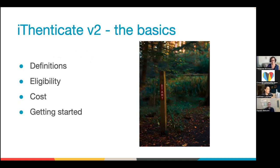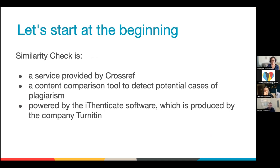Just starting with some quick definitions, because there are some technicalities we need to go over. Similarity Check is the service provided by Crossref — it is a content comparison tool to detect potential cases of plagiarism. It is powered by the Authenticate software, which is produced by a company called Turnitin. So Crossref and Turnitin are partnering with each other to provide you this service and this software.